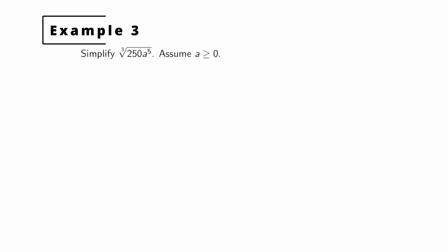Example 3: simplify the cube root of 250a to the 5th. We'll assume a is not negative, though for this problem it doesn't really matter. We start with the prime factorization: 250 is 125 times 2, and 125 is 5 cubed, so 250 becomes 5 cubed times 2. For a to the 5th, it's not a perfect cube, but we can write it as a cubed times a squared.